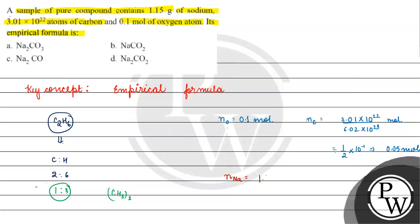Number of moles of sodium will be mass of sodium 1.15 gram by atomic mass of sodium which is 23 gram per mole. This will be 0.05 moles.